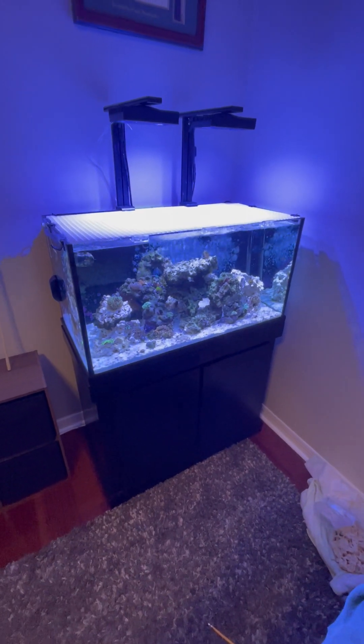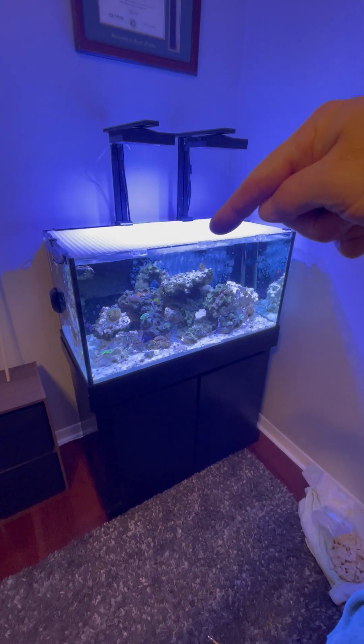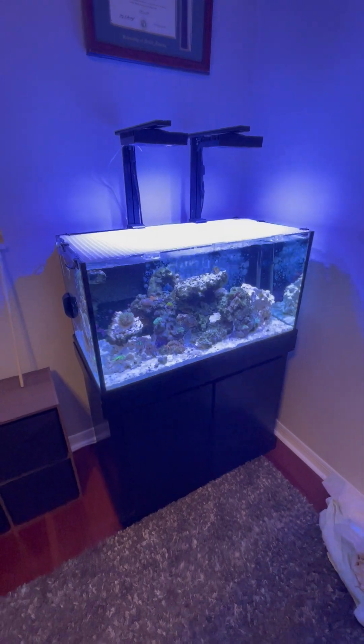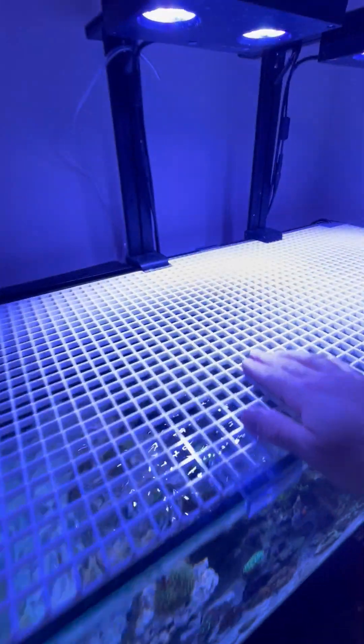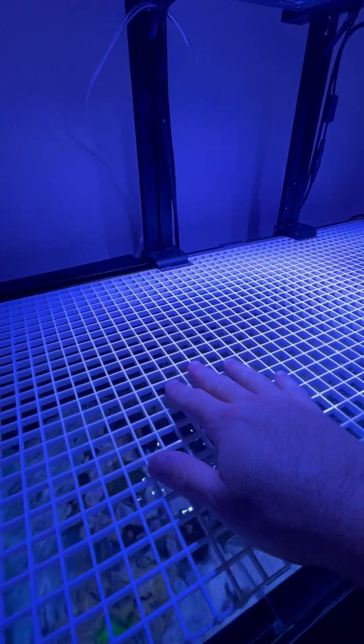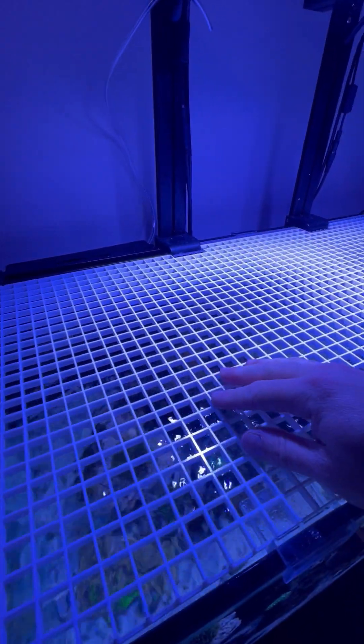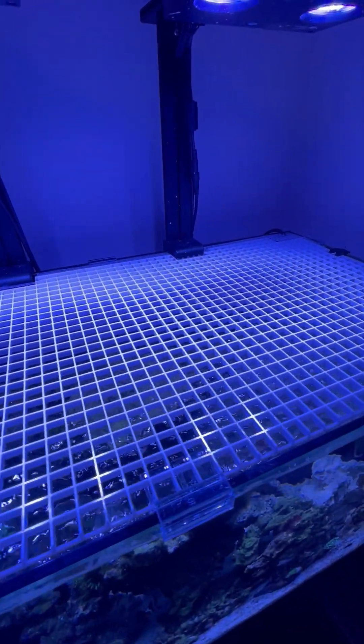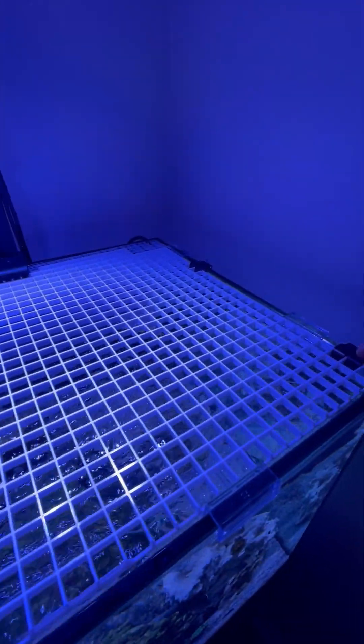All right guys, just making a quick video to show you how I made the lid for my rimless aquarium. Really easy. This was just a light grate that I got from Home Depot. It comes in a big sheet and then I just custom cut it.